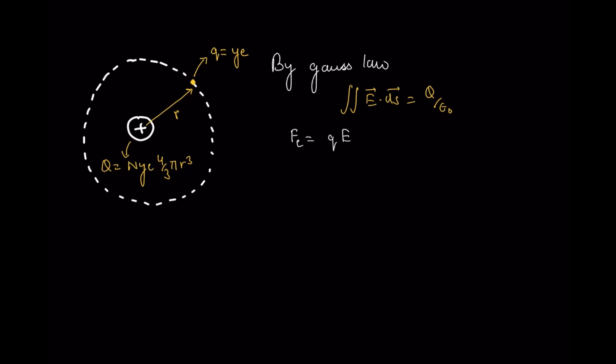I will calculate the electric field at R, then calculate the force. Force is defined as q times E. The electric field at that point is E·4πr² = nye·4πr³/3ε₀. Here 4π cancels out, r² cancels with r³, leaving a single r. So electric field is nyeR/3ε₀, and electrostatic force is nye²R/3ε₀.